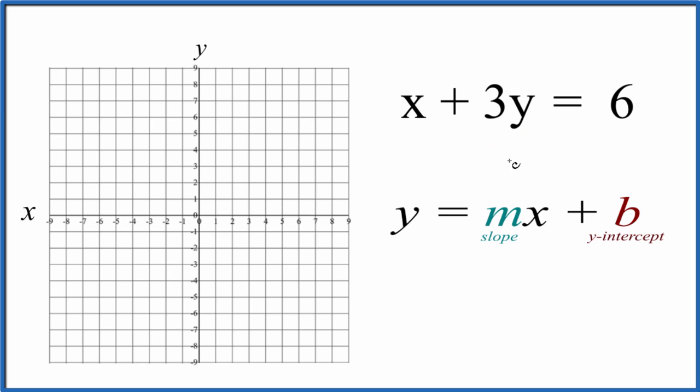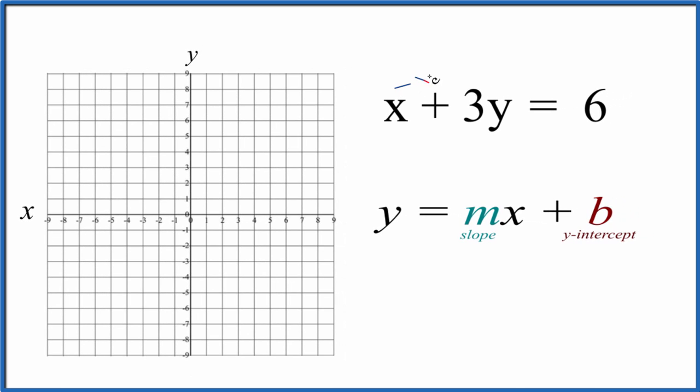So the first thing we need to do is to get y by itself up here with this x plus 3y equals 6. Let's subtract x from both sides.